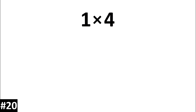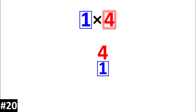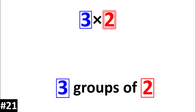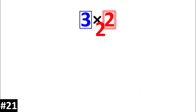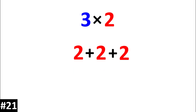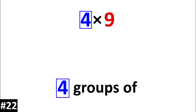1 times 4 is the same thing as 1 group of 4. 3 times 2 is the same thing as 3 groups of 2. 4 times 9 is the same thing as 4 groups of 9.